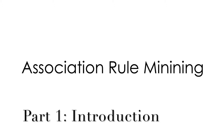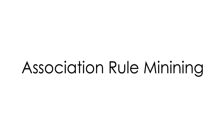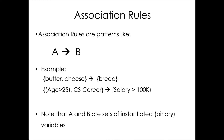Hello everyone. I'm going to present a tutorial on association rule mining. In the first video we're going to see the basics and some theory, and then in the next video I want to show one example, and later how to implement this in Python. Association rules are patterns like A implies B, for example butter and cheese implies bread, or age greater than 25 and computer science career implies salary greater than 100K.